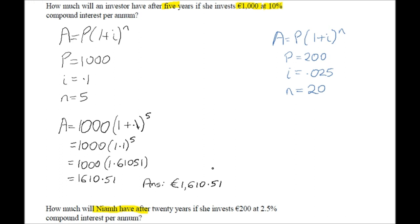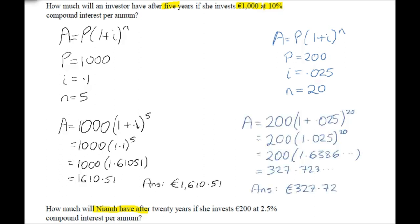Now try doing this for the question at the bottom. Check your answer here. You can see that we have rounded the answer to the nearest cent. So as it's 0.723, and the 3 is less than 5, we round down to 0.72.